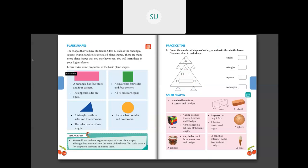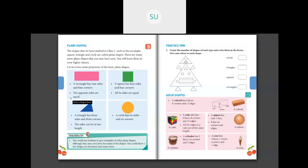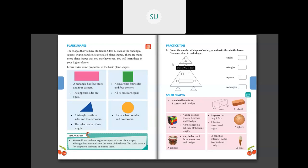The shapes we studied in class one — rectangle, square, triangle, and circle — are called plane shapes. There are more plane shapes like pentagon and hexagon, which you'll learn in higher classes. To revise: a rectangle has four sides, four corners, and opposite sides are equal. A square has four sides, four corners, and all sides are equal. A triangle has three sides and three corners. A circle has no sides and no corners.